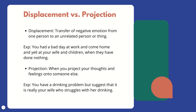Projection: when you project your thoughts and feelings onto someone else. I'm not displacing my anger onto them — I'm attributing my feelings to you. Example: you have a drinking problem, but you suggest it's really your wife who struggles with her drinking. 'I don't have trouble with finances — you must have trouble with finances.' It's your thoughts and feelings, but you're giving them ownership to someone else: 'I'm feeling anxious and frustrated — you must be feeling anxious and frustrated.'